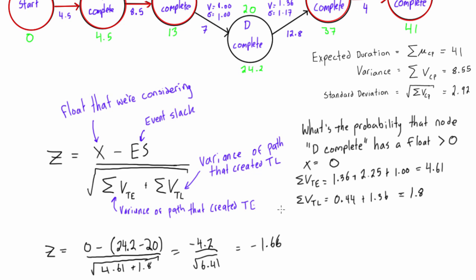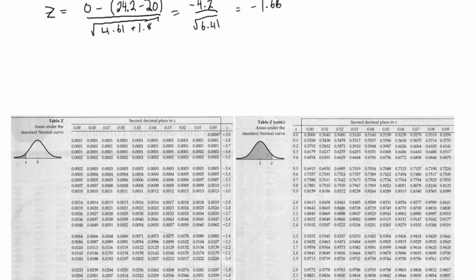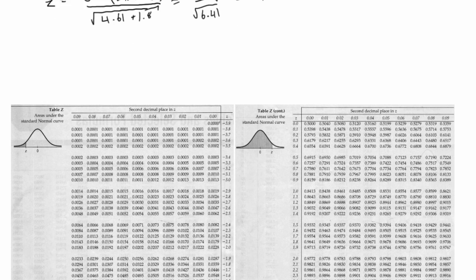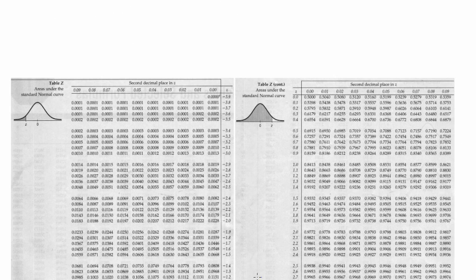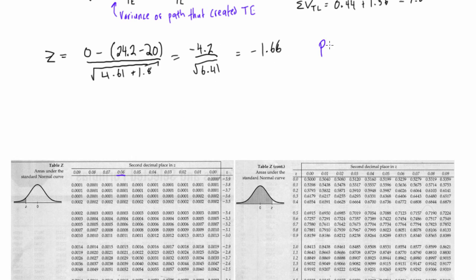We take that z-score to our z-score table. Our value was negative 1.66, so we find negative 1.6 in the row and 0.06 in the column. Combining those gives negative 1.66, and where they meet we get 0.0485. So the probability corresponding to z equals negative 1.66 is 0.0485.